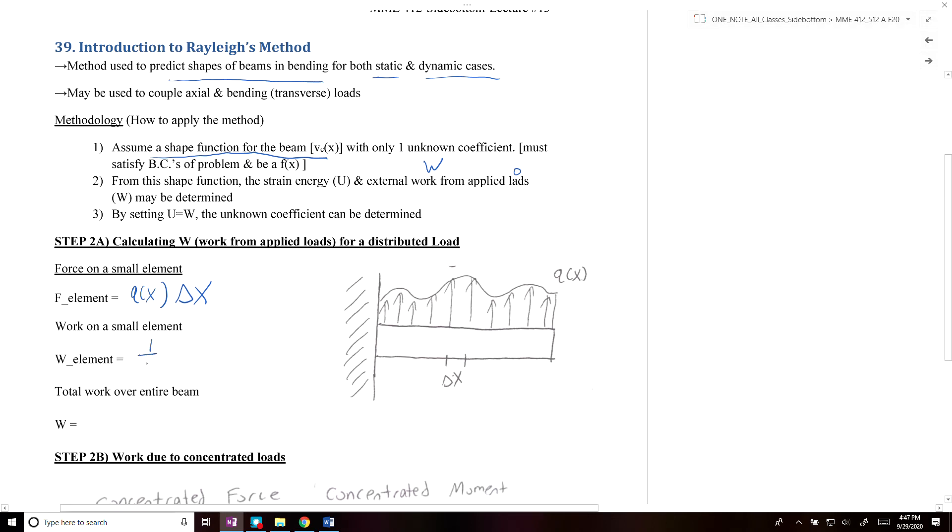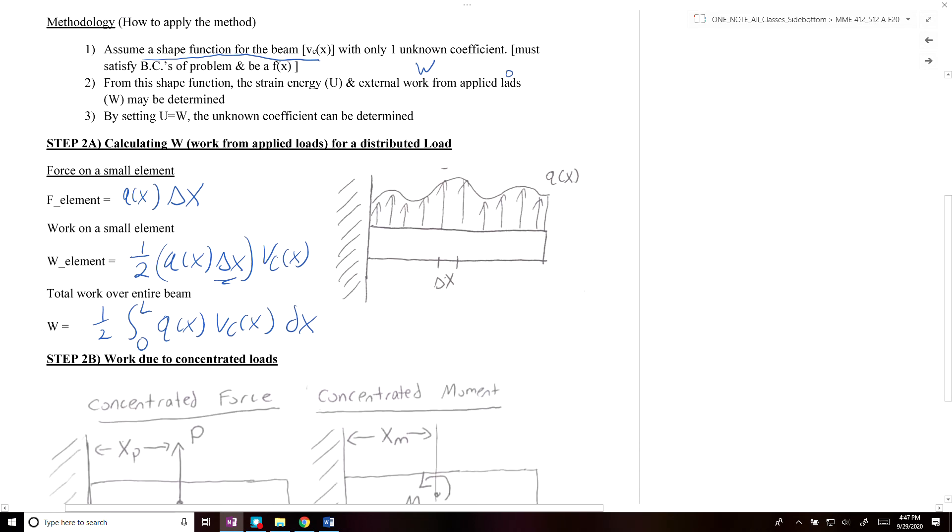The work on each element is q(x) delta x times the displacement Vc(x) at that point. The work over the entire beam is the integral of this term, so our delta x becomes dx, and we integrate across the whole length of the beam: the integral of q(x) Vc(x) dx. This gives us the work applied to our beam as a function of x.